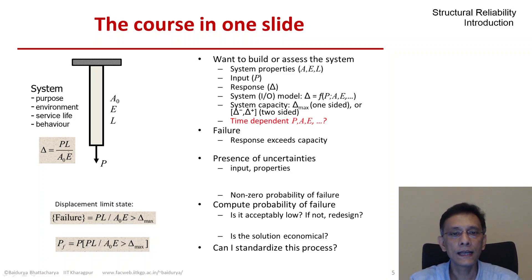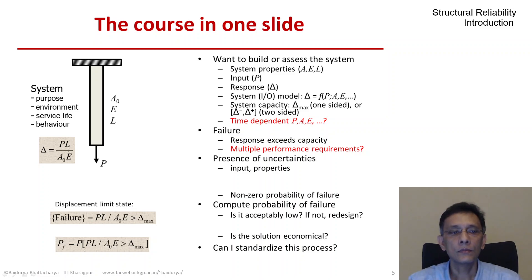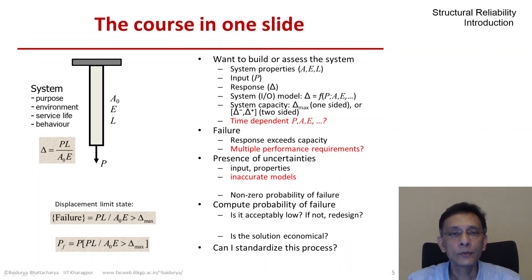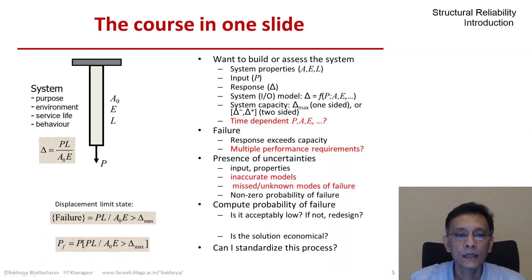Things become more interesting and challenging if the load or the system properties are time-variant. The loads could be dynamic, the system properties could be subject to degradation processes. Instead of just one failure mode, I could be interested in more than one — this particular system could be subjected to torsion, or if the load is compressive, I would be worried about buckling. If the models I have employed are uncertain — if I have put too many idealizations that make them inaccurate and random — I would need to consider the randomness in the models as well. What if I have missed some failure mode or don't know about one? That would be another challenge.